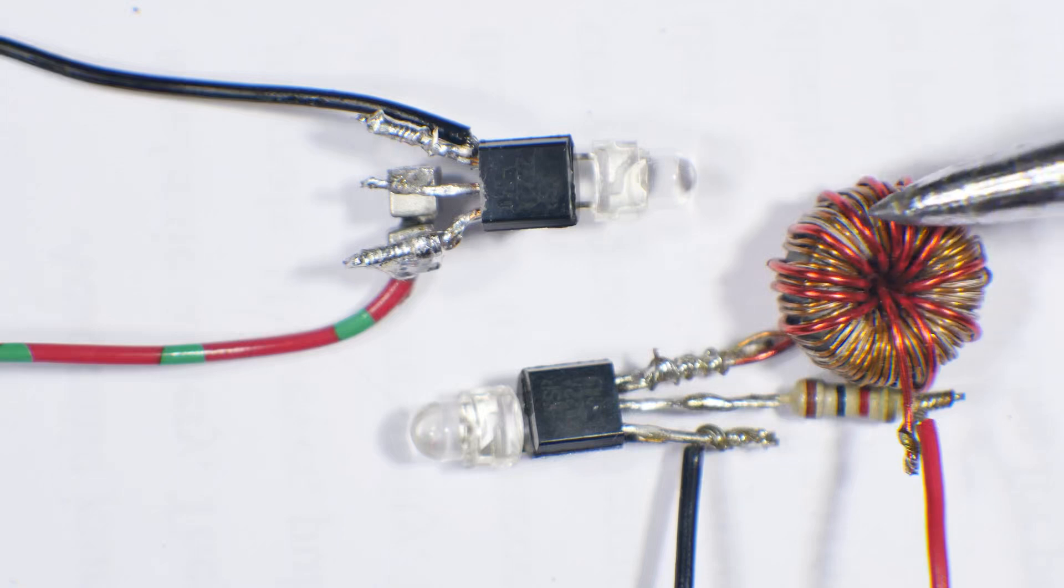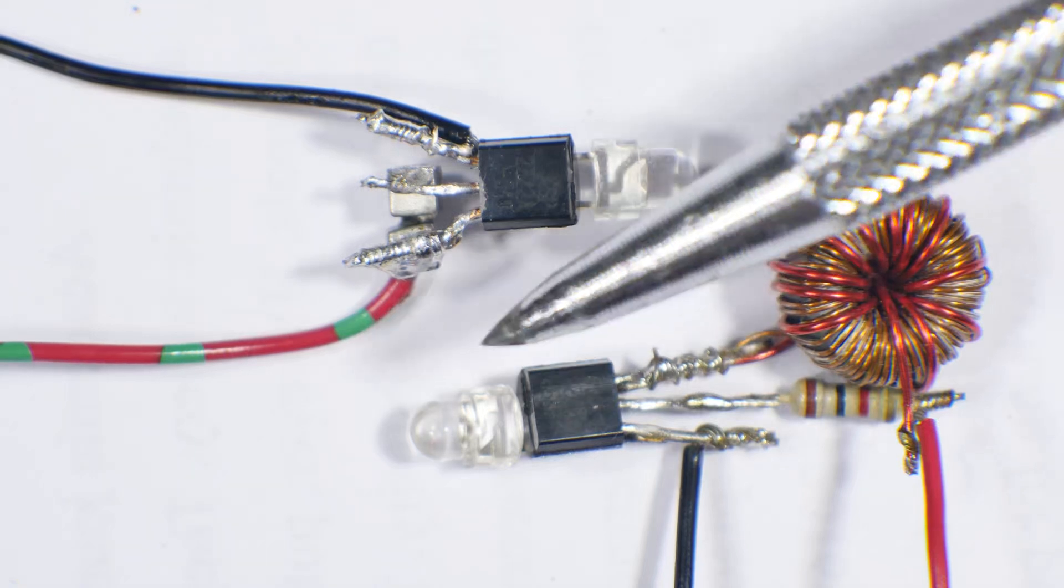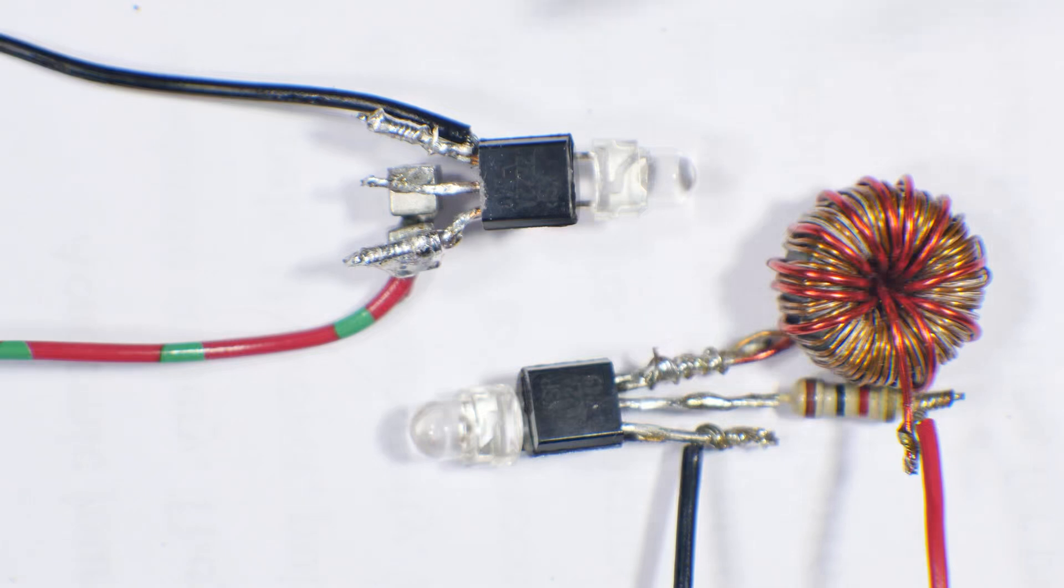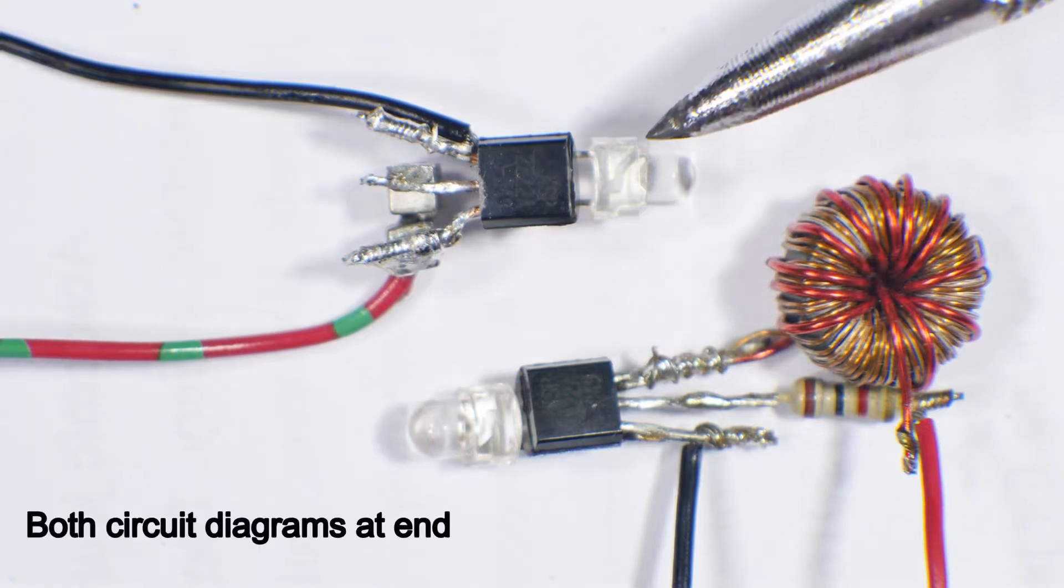You can see this one uses a toroid coil, a resistor, a 2N2222 transistor, and a high efficiency LED. Now this is my version of it—the circuit's quite different, but it does the same thing.